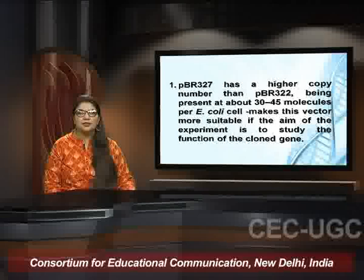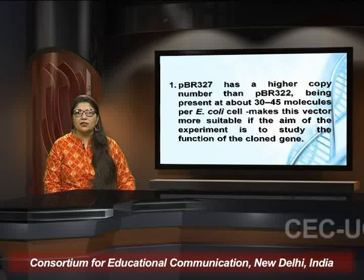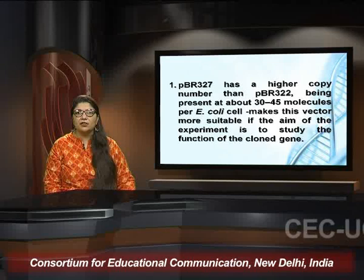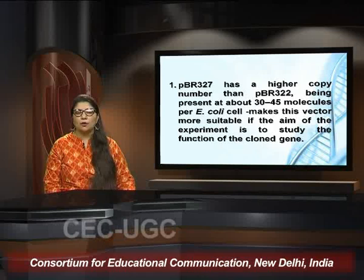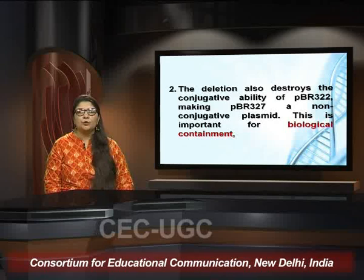PBR 327 had a much higher copy number than PBR 322, being present at about 30 to 45 molecules per cell — so the copy number increased from 10–12 to 30–45 molecules. This makes PBR 327 more suitable if the aim is to study the function of the cloned gene. The deletion also destroyed the conjugative ability of PBR 322, making PBR 327 a non-conjugative plasmid.